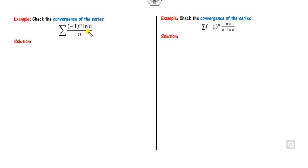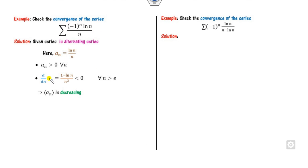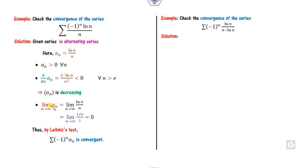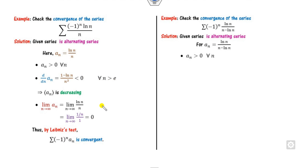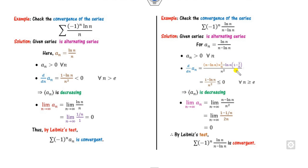Look at the second-to-last example. Taking the derivative, it is less than 0 for all n greater than e, because ln(e) = 1. Again the limit is 0, so by the Leibniz test the series is convergent.